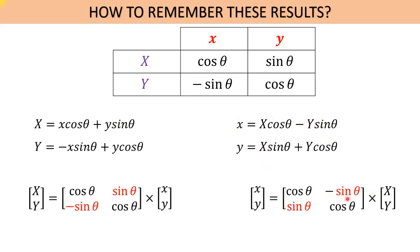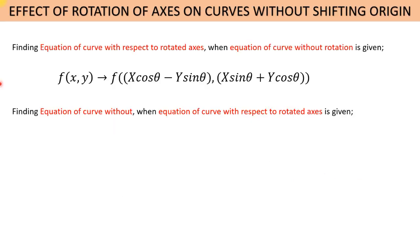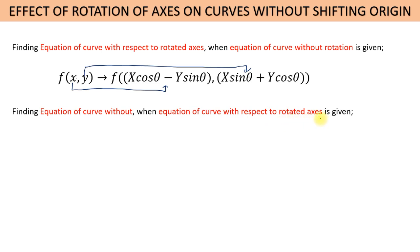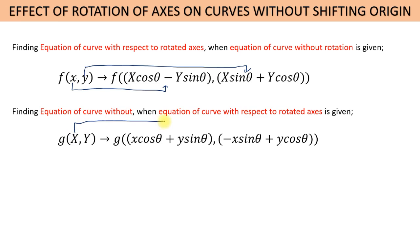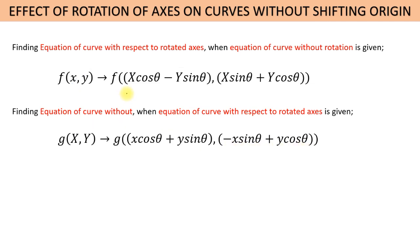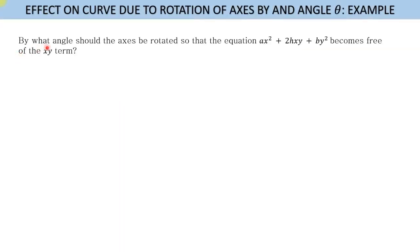Now we will learn the effect of rotation of axes on curves without shifting origin. If we are given the equation of a curve without rotation and need to find the equation with respect to the rotated axis, we simply replace small x by X·cos(theta) minus Y·sin(theta), and small y by X·sin(theta) plus Y·cos(theta). Conversely, if given the rotated equation and we need the original, we substitute capital X and capital Y by the corresponding expressions.